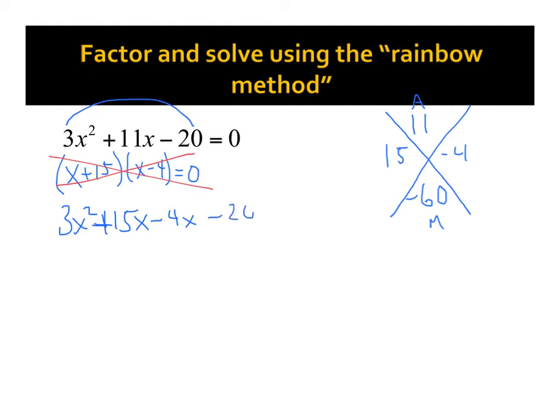Then I have my minus 20, and that all equals 0. So I'm just changing the 11x to a 15x minus 4x. Notice how that is the same thing. I just split it up.